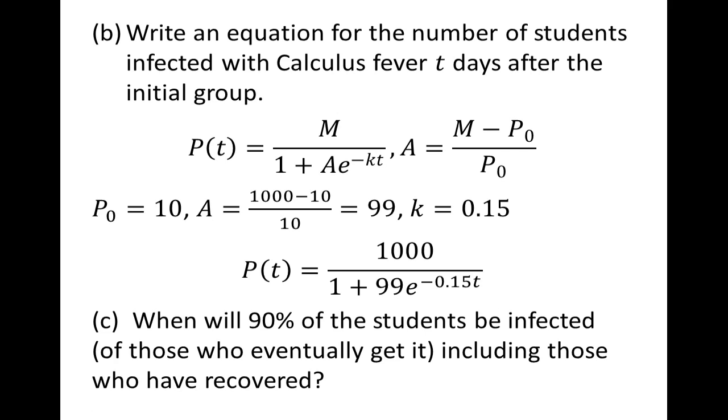So now we have one final question. When will 90% of the students be infected? And this includes those who may have recovered, but of course you'll never recover from calculus fever. When we say 90% of the students, we're talking about 90% of the 1,000 students who will eventually get it. So 90% of 1,000 is 900 students. We want to know when is the population 900.